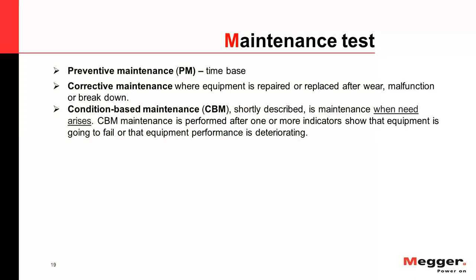If a problem occurs between maintenance cycles, that is corrective maintenance — correction of a failure. There is also condition-based maintenance (CBM), which is very good for numerical protection relays. CBM involves performing a fast test and checking for any indication of an issue. If there is no indication, you do not need to take an outage, which helps your KPI. All approaches work well — it depends on the utility and what they need. All these tests are performed using Megger test equipment such as the Freja and SMRT series.